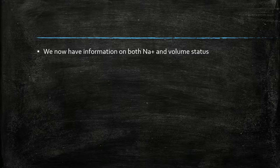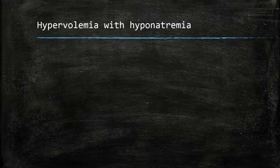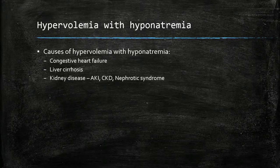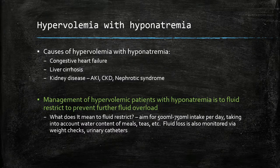Once we have information on both the sodium and the volume status of the patient, we can discuss management options. There are several causes of hypervolemia with hyponatremia, including congestive heart failure, liver cirrhosis, pregnancy, and kidney disease such as CKD and nephrotic syndrome. Management of hypervolemic patients with hyponatremia is to fluid restrict to prevent fluid overload — reducing fluid intake to 500–750 ml, accounting for water content of meals, teas, and coffees. Fluid loss is also monitored via weight checks and urinary catheters.